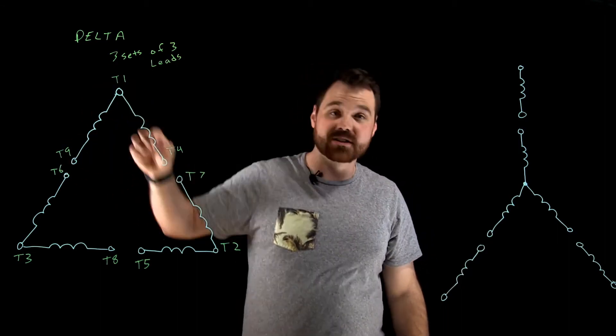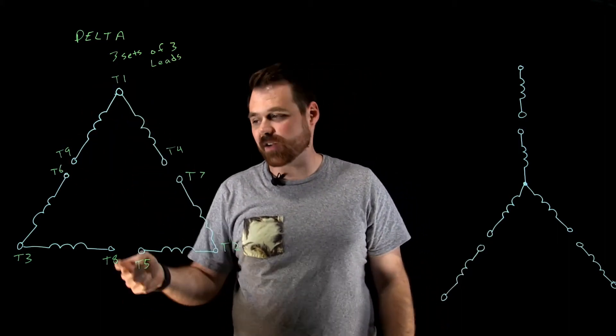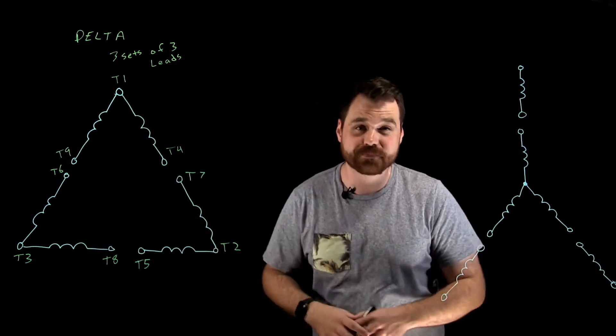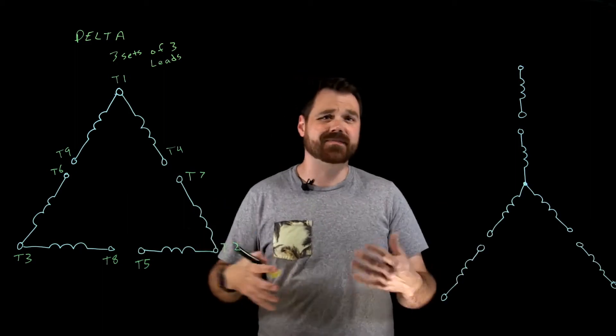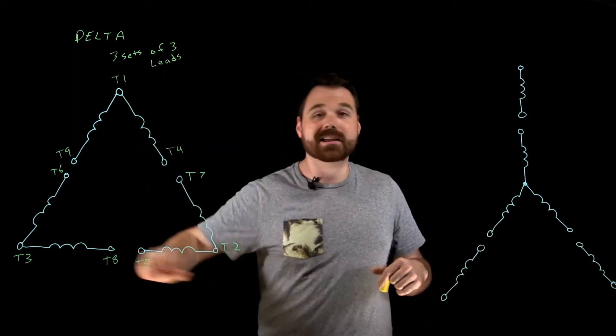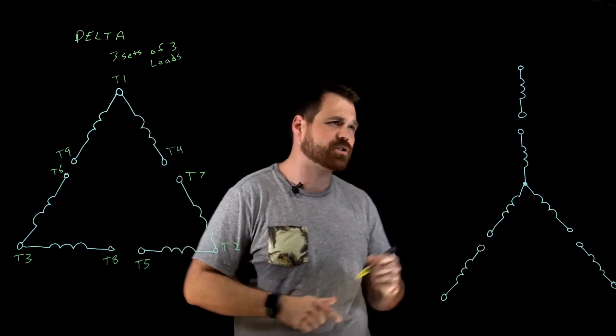T9, T4, T1, T4, T7, T2, T5, T8, T3 and T6, I'm gonna have continuity. So that's how I would determine the delta motor. And that terminal identification becomes very important when we're actually attempting to connect up this motor into that low or that high voltage connection.